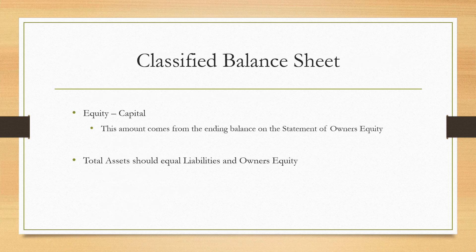The last section on the classified balance sheet is the equity part — the capital account. This amount comes from the ending balance on the statement of owner's equity, not from the trial balance. Everything else on the classified balance sheet comes from the adjusted trial balance, but the equity portion comes from the statement of owner's equity. Total assets should equal liabilities plus owner's equity — if not, we've made an error. The balance sheet should also match up with the post-closing trial balance. Hopefully this gives you a good overview of completing the accounting cycle.